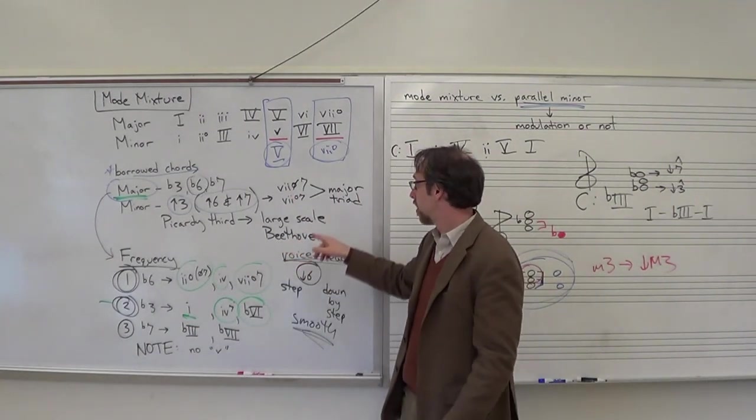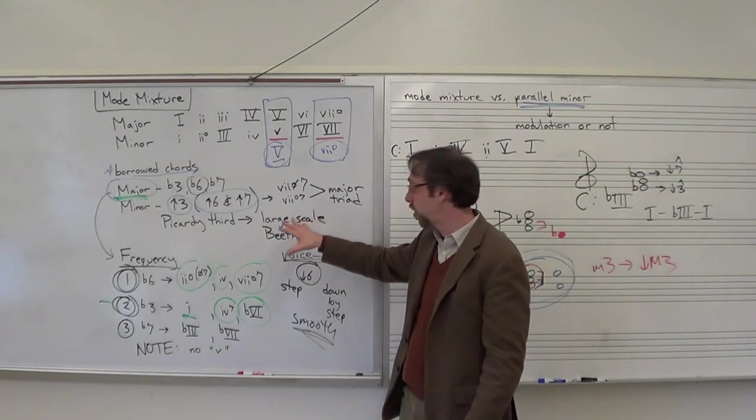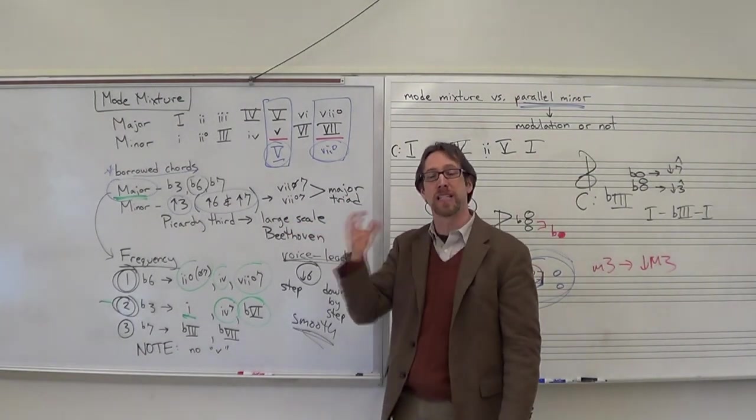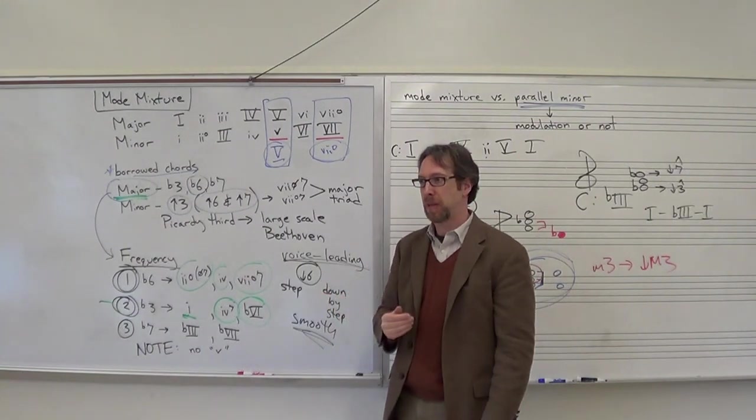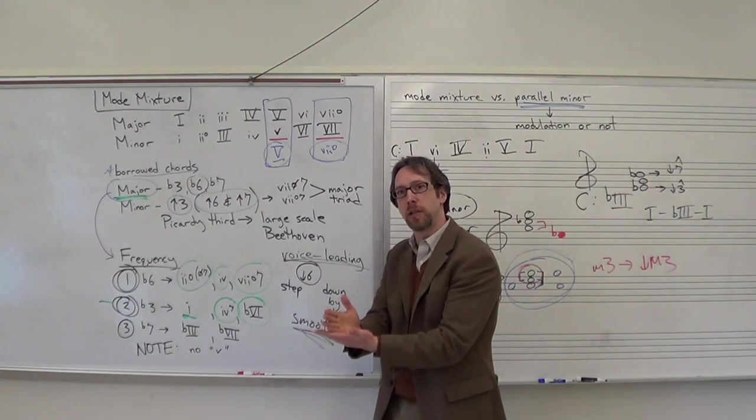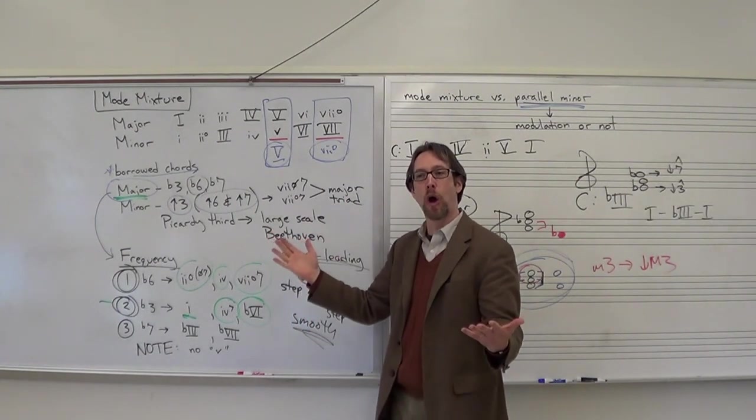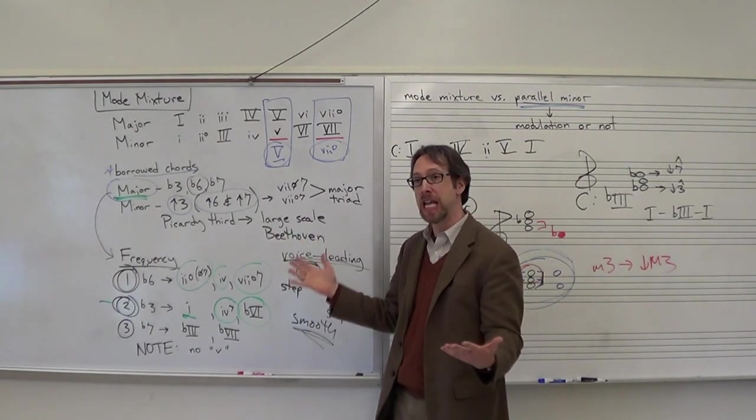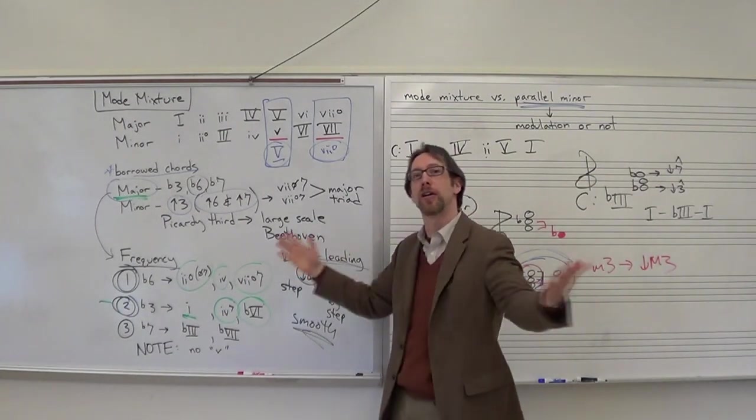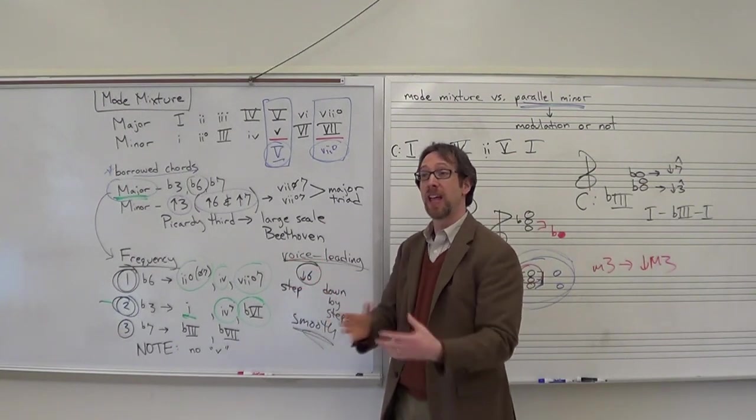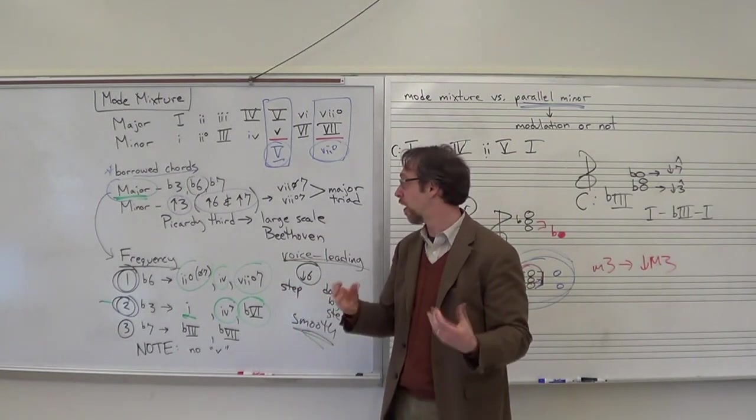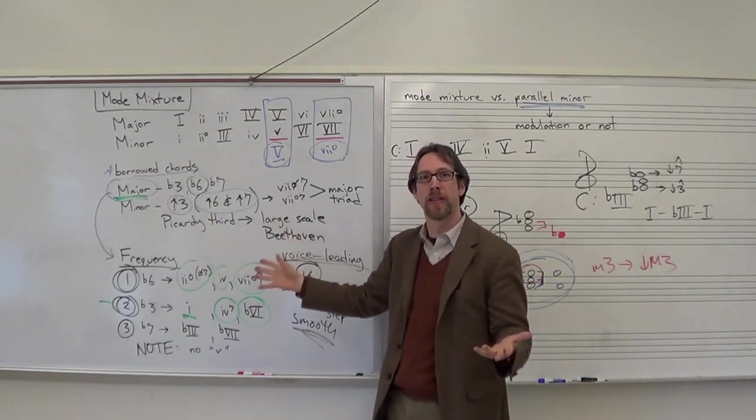So that is why you can have this Picardy third in a minor and it works because you're going to resolution and the major triad is just so perfectly resolved. You don't mind that it's not the minor sonority you were expecting. Beethoven loves to do everything big. So when you take this concept and put it into a large scale, Beethoven might start a symphony movement in C minor and when he goes exposition, development, recapitulation he might go and have the whole entire recapitulation in the major. Almost like Picardy third for the entire recapitulation. Or even the entire last movement of a symphony. That idea of saying I'm going to have and you could consider that mode mixture.